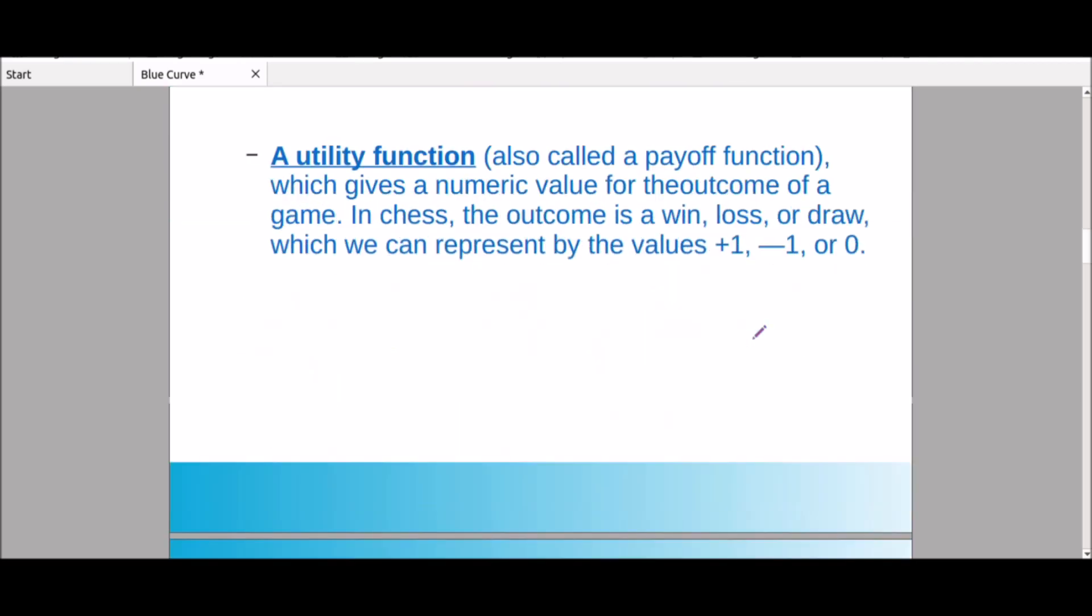Now utility function. We can choose the board because we can choose the games. We decide by utility values. Plus 1 is one point, minus 1 is a negative point, 0 is a tie. Plus 1 is MAX wins, minus 1 is MAX loses, 0 is a draw. Those are called utility function. This is the payoff function, a numeric value outcome for the game.